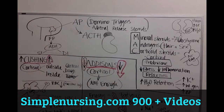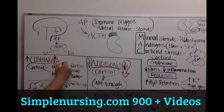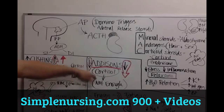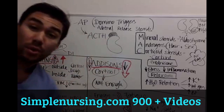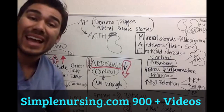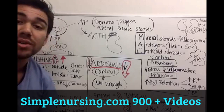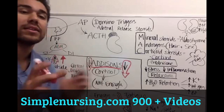Cushing's disease is just having too much cortisol — way too much. Addison's disease is not having enough cortisol. And I can explain exactly how the body produces cortisol and where it comes from.